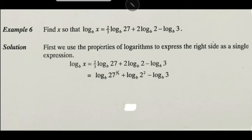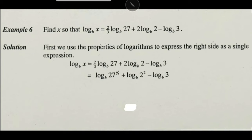The technique is to remove the logs. To do that, you must write both the left-hand side and right-hand side as one single log. This works because log functions are one-to-one: if the log values are equal on both sides, then the arguments are also equal. On the left there is already only one log, so we don't need to do anything. On the right there are three logs, so we must combine them into one log using properties.